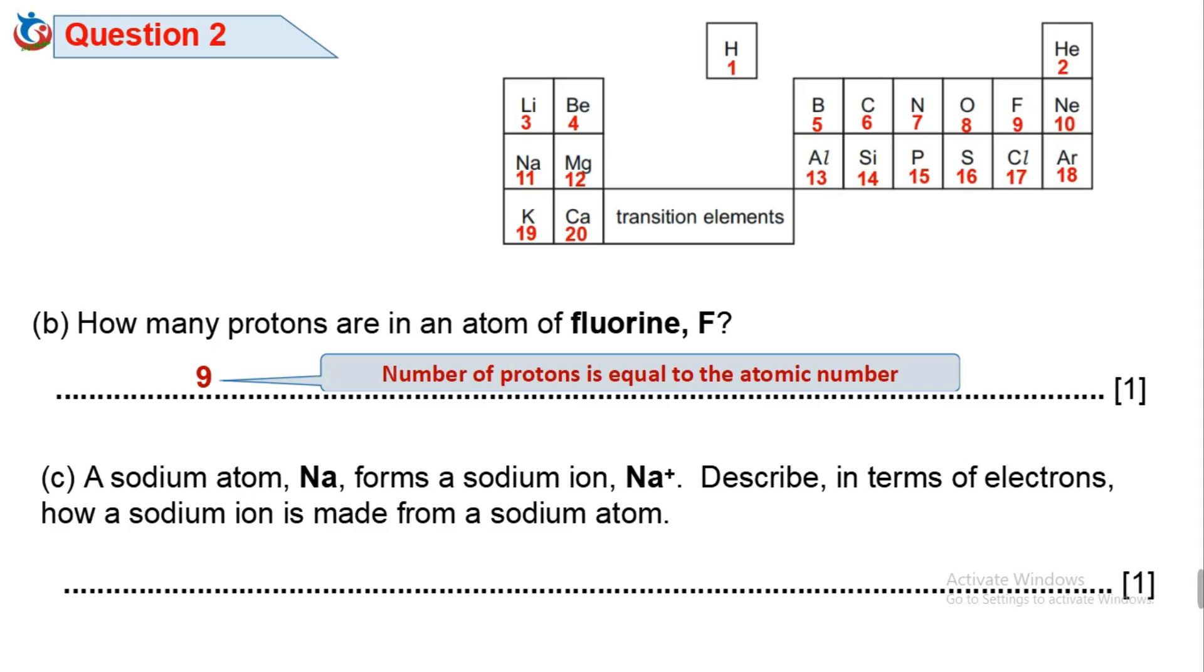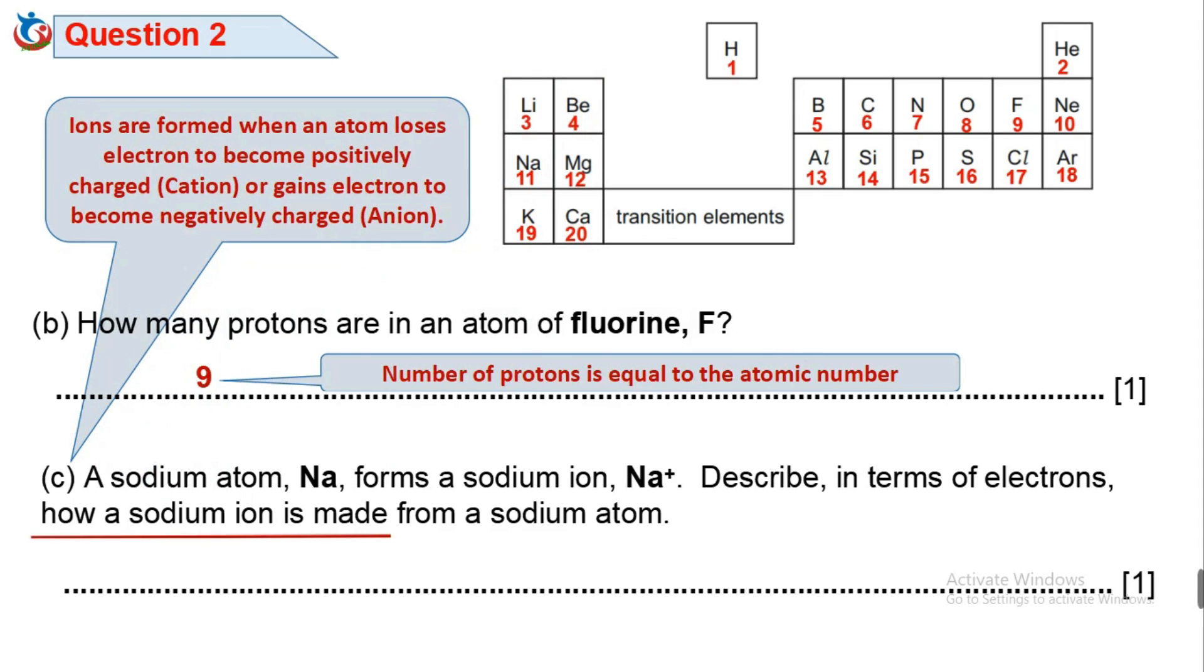Question 2c. A sodium atom forms a sodium ion. Describe in terms of electrons how a sodium ion is made from a sodium atom. The first thing to understand is how ions are formed. Ions are formed when an atom loses electrons to become positively charged cation or gains electrons to become negatively charged anion. Back to our question. Sodium atoms form a positively charged sodium ion. Positive ions are formed by losing electrons. Hence, sodium atom loses an electron to form sodium ion.